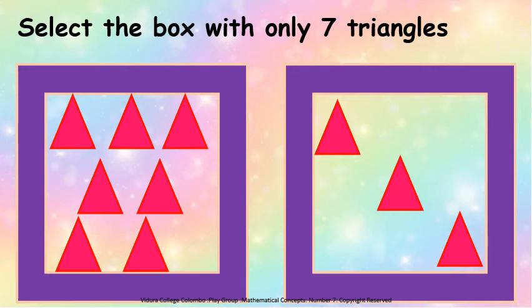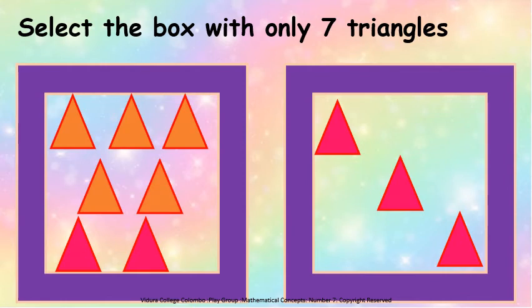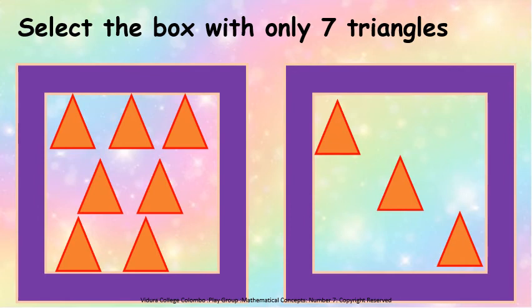We are going to do a small activity. We are going to select the box with only 7 triangles. Can you see? There are 2 boxes. In the first box there are 1, 2, 3, 4, 5, 6, 7 triangles. Shall we count the second box also? 1, 2, 3. Now we have to select the box with only 7 triangles. We are going to draw a line under the box with only 7 triangles.